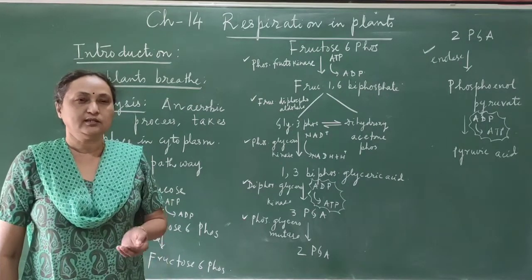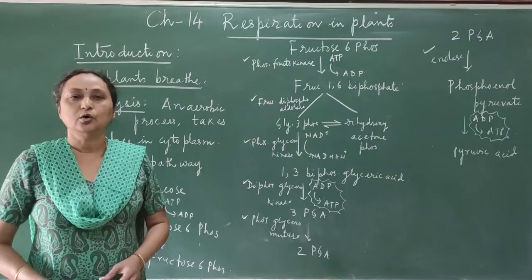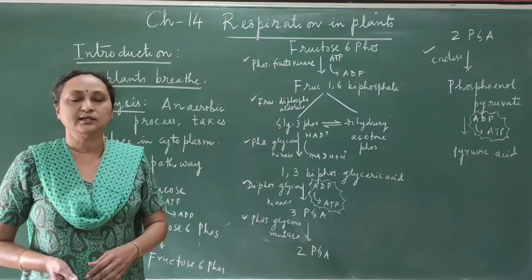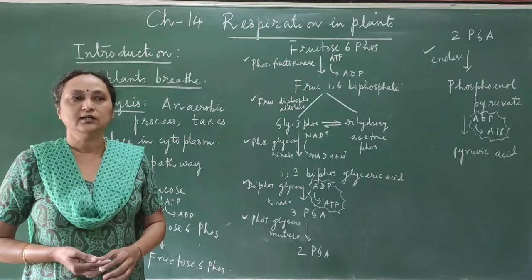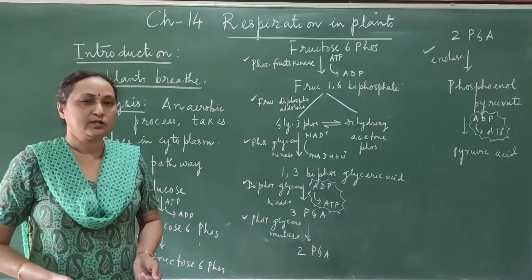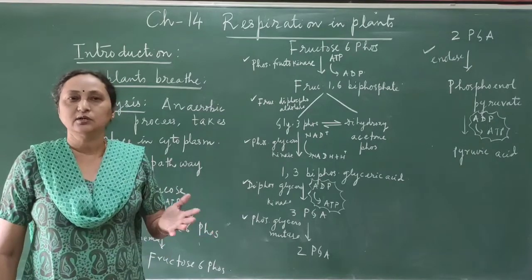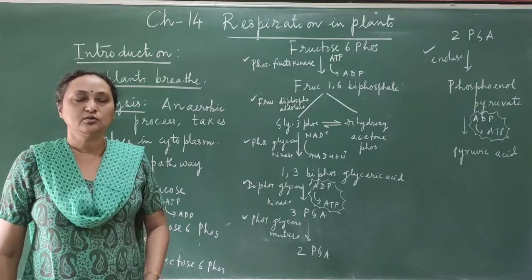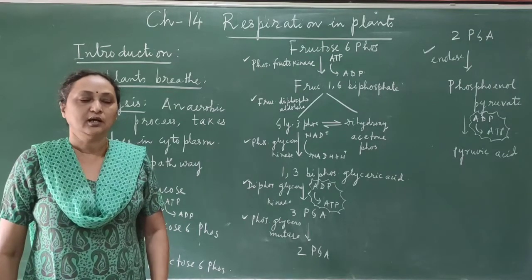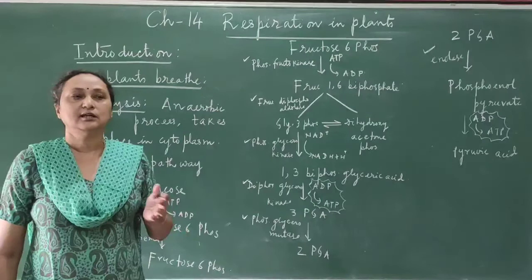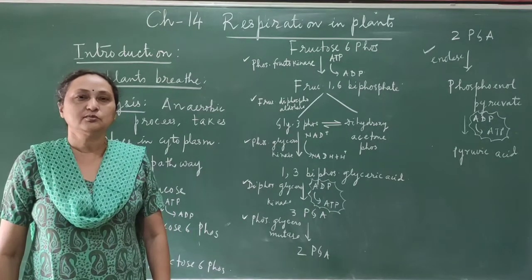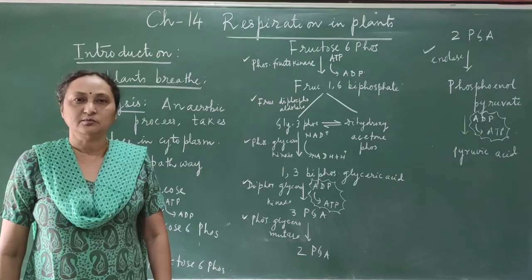Plants are called autotrophs — whether green plants or blue-green algae. These autotrophs can prepare their own food; they take solar energy and convert it into chemical energy, which is stored in the form of glucose, fructose, or starch. When the food is oxidized, energy is liberated in the form of ATP, which is used for metabolic activities.